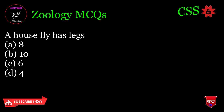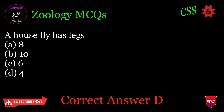A housefly has legs: A. 8, B. 10, C. 6, D. 4. Correct answer: D.